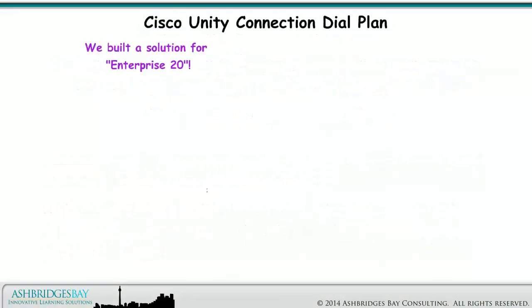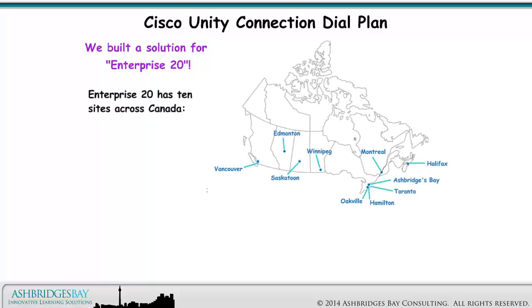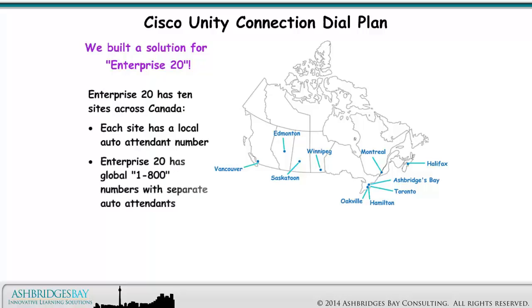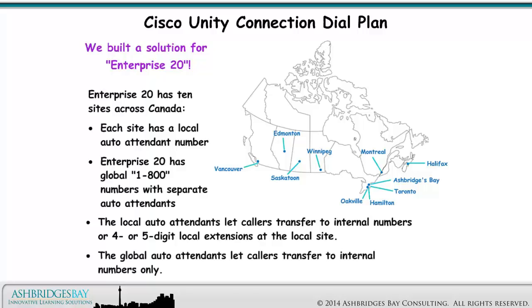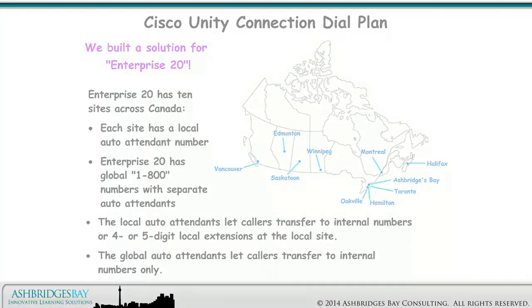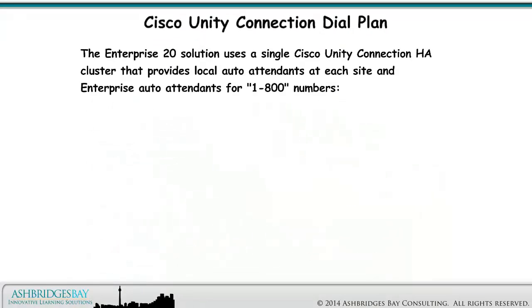We built a solution for Enterprise 20. Enterprise 20 has 10 sites across Canada. Each site has a local auto-attendant number. Enterprise 20 has global 1-800 numbers with separate auto-attendants. The local auto-attendants let callers transfer to internal numbers or 4- or 5-digit local extensions at the local site, and the global auto-attendants let callers transfer to internal numbers only.